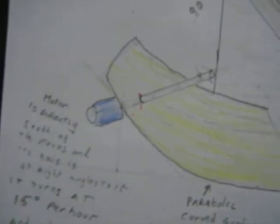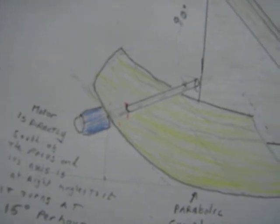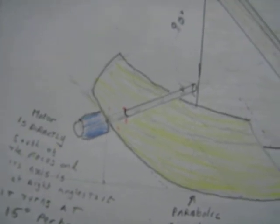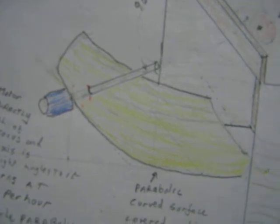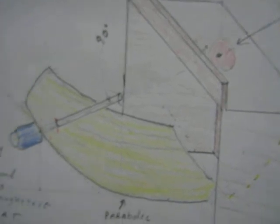The axis of the parabola is pointed directly at the sun. When setting it up, you would first point it at the sun at its zenith. This motor here is designed to turn at 15 degrees an hour, which keeps the sheet focused exactly on the same spot, the little hot plate in the center.